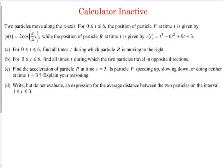Two particles move along the x-axis between 0 and 6. The position of particle P at time T is given by this cosine function, while the position of particle R is given by a cubic function. Notice this one changes a little bit. We've been given velocity functions the majority of the time, but here they give us position functions.